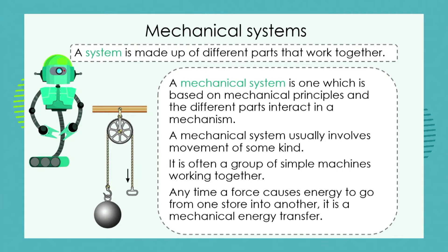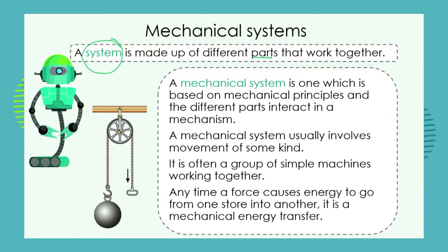Now let's talk about mechanical systems. When we refer to a system, we talk about different parts that work together. A skateboarder sliding down a ramp, or two table tennis players knocking a ball back and forth — all of those are examples of systems where objects are transferring energy between them. We can classify systems according to what happens in the energy transfer within that system.